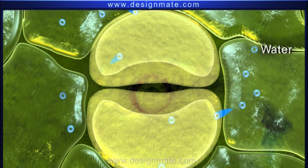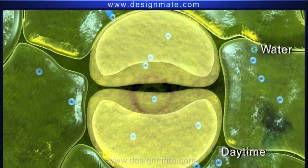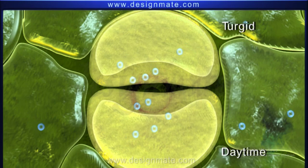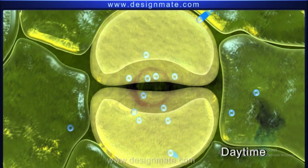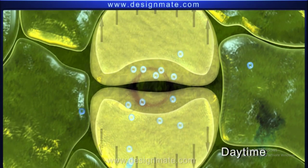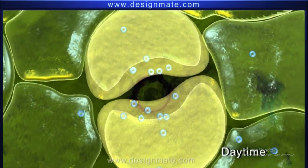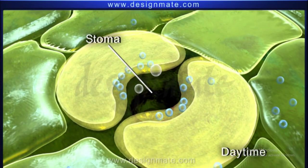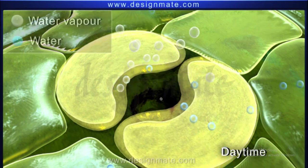During daytime, the guard cells absorb water from the surrounding epidermal cells and become turgid. As a result, the outer walls of the guard cells become more convex, pulling apart the inner walls. Thus, the stoma opens, expelling water vapor.